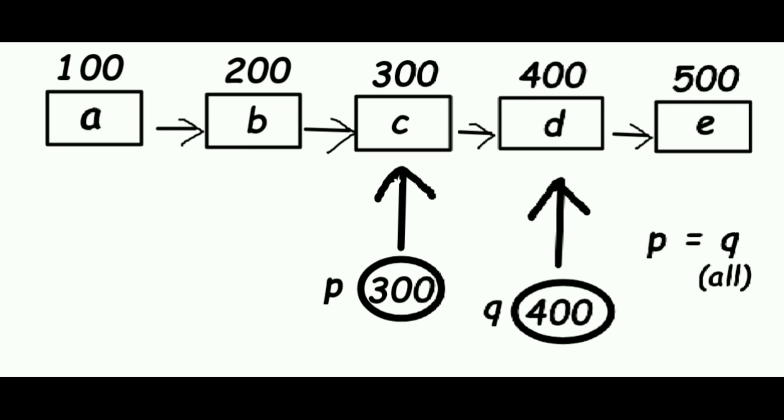Here we have a linked list with 5 nodes where A is stored in location 100 and A points to location of B which is the next node of A. So A points to B which has the location 200. B points to C which has the location 300. C points to D which has the location 400.